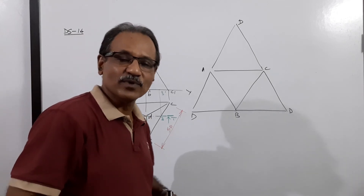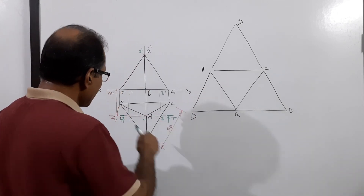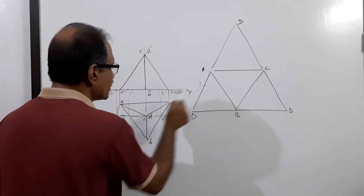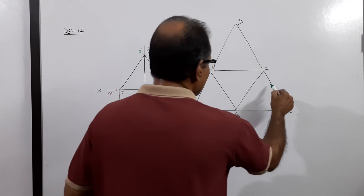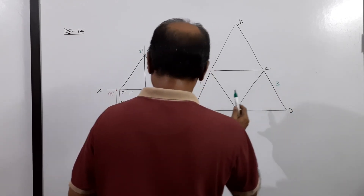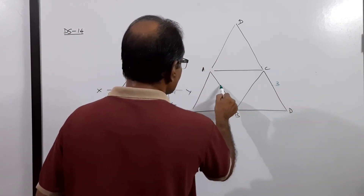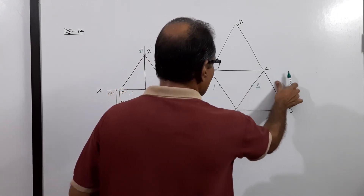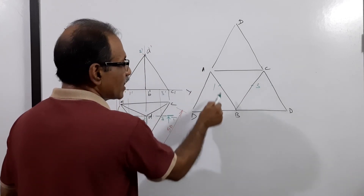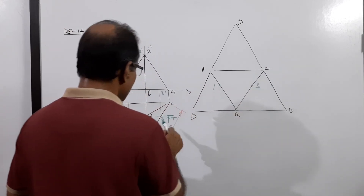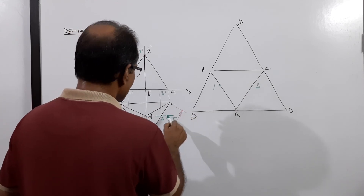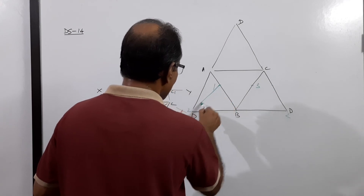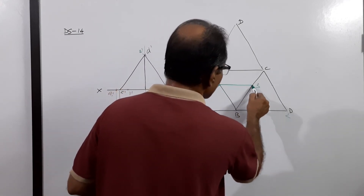Now, how to bring the cutting plane points onto the development: AB has point 1, and BC has point 3. Point 2 is at D. So mark 1 on AB, 3 on BC, and 2 at D, then connect 1 to 2 to 3 to show the cutting plane trace on the development.